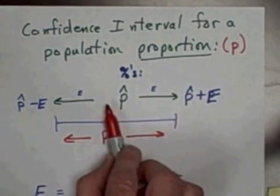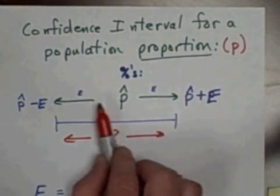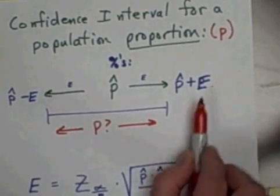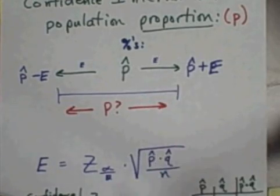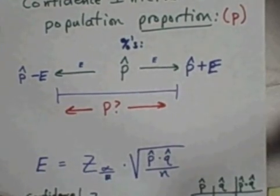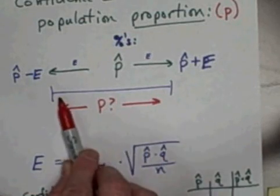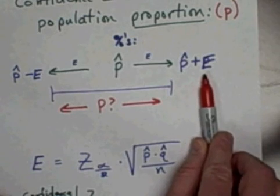And what we do, we form an interval by going below P hat and above P hat, and these are all in percents. These are all percent values. The amount that we go above P hat and below P hat is called the margin of error. So we go from P hat minus E all the way up to P hat plus E, and we form this interval as a percent.